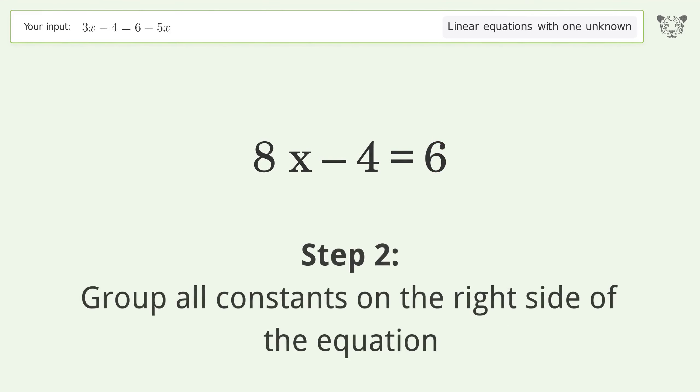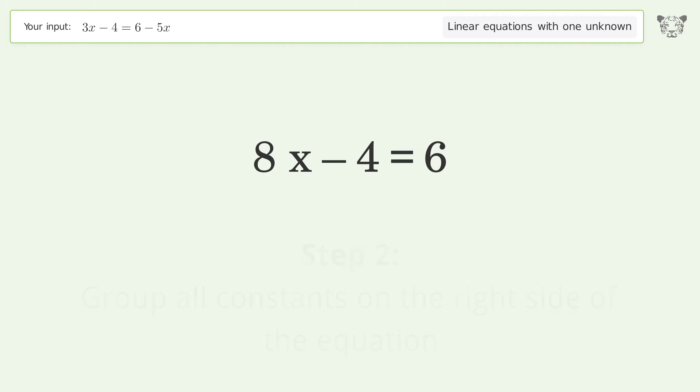Group all constants on the right side of the equation. Add 4 to both sides. Simplify the arithmetic.